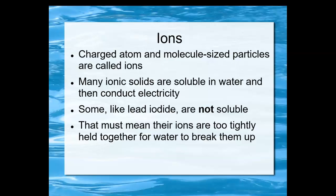But some, as you've seen in the precipitation experiment, some like lead iodide are either not soluble or not very soluble because they form solids and they stay solids in water. That must mean that the ions of lead and iodide are too tightly bound together for water to break them up. And so they remain as a solid or they form as a solid as soon as they hit each other. Lead iodide is an insoluble yellow solid.